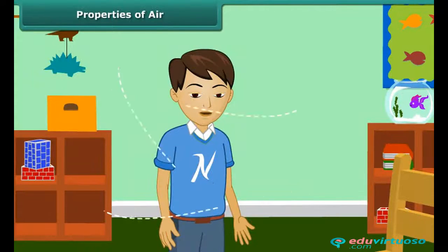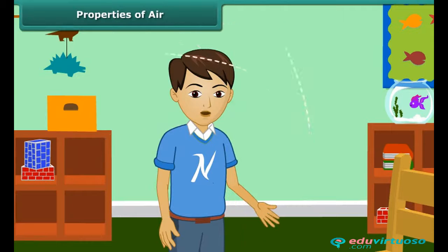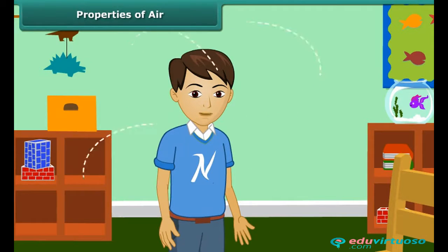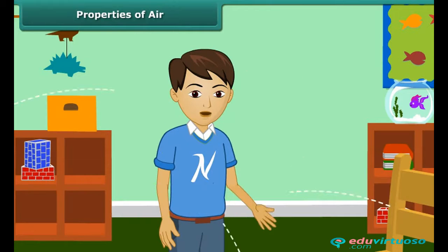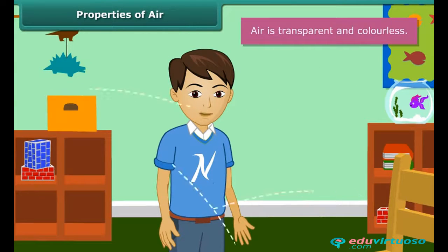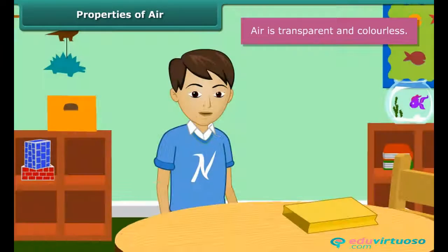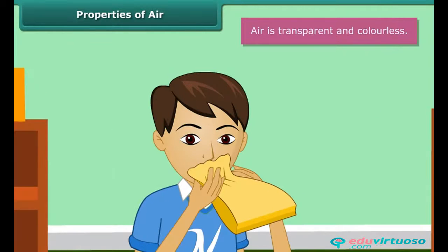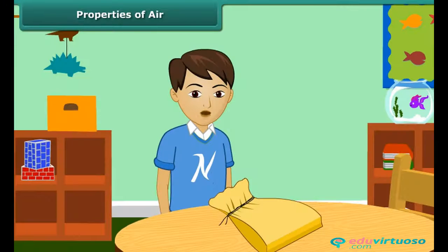We all know that there is air around us. Look around — can you see the air? No, that is because air is transparent and colorless. Take a paper bag, blow air into it, and seal its mouth. Does the bag appear bloated?